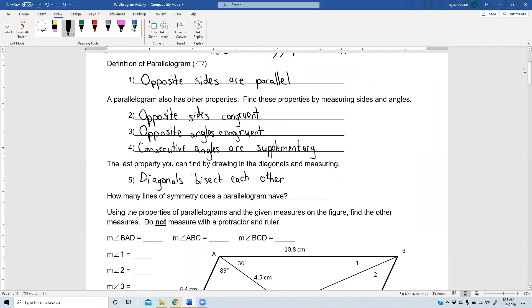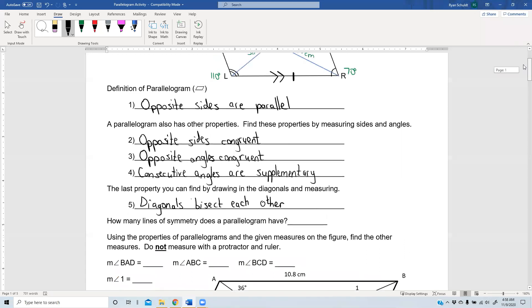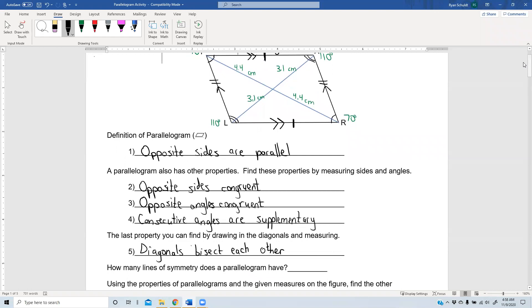So those are our five properties. Now let's say we tried to fold this parallelogram and fold it perfectly in half. Is there any way that we can fold it towards folded perfectly in half? No, there's not. So that's because a parallelogram has no lines of symmetry. You cannot fold it perfectly in half, no matter which way you turn it or anything like that.